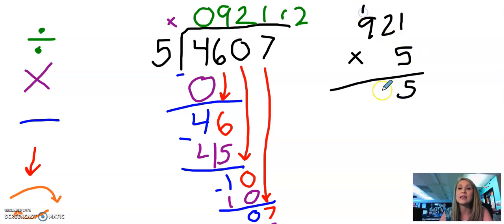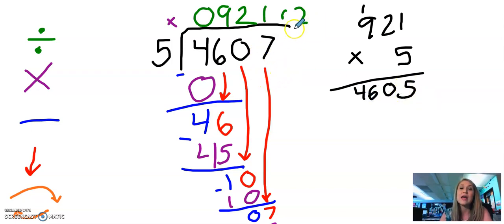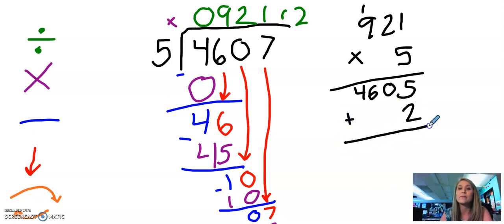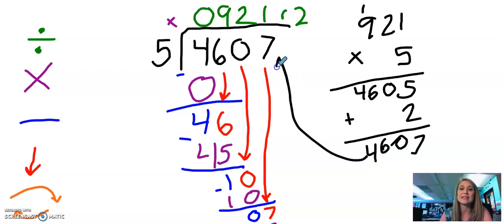Five times two is ten. Carry the one. Bring down the zero. Five times nine is 45. Plus one is 46. It's okay that it doesn't match your dividend yet because I still have to add in my remainder. So I'm going to add my two, which gives me seven, zero, six, four. And look at that — it's the same as my dividend, which means I got the problem correct.